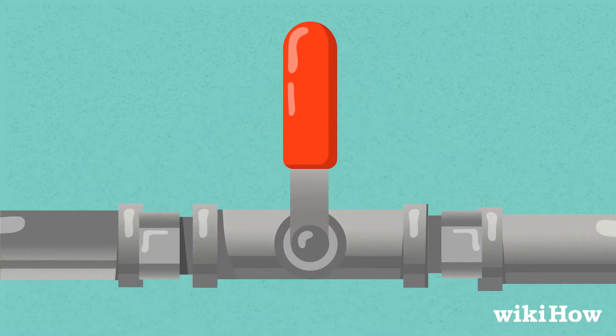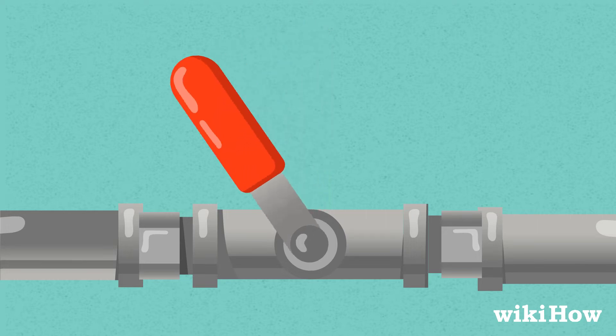For a lever, or ball valve, turn the valve so that it's parallel to the pipe.